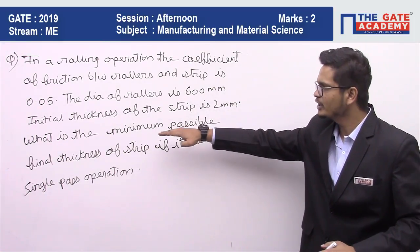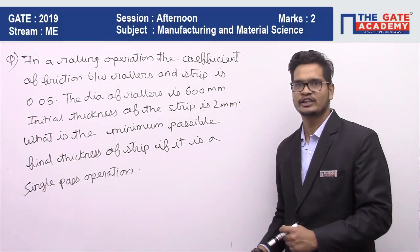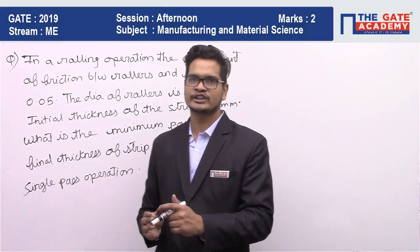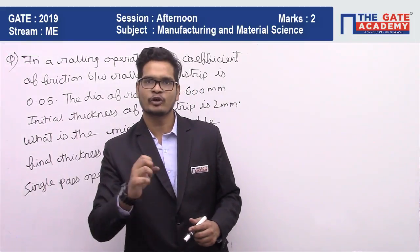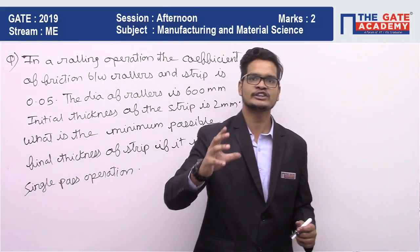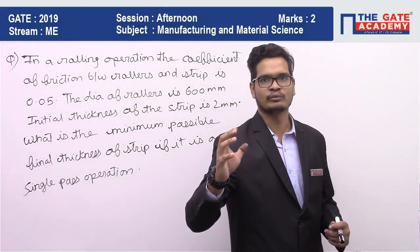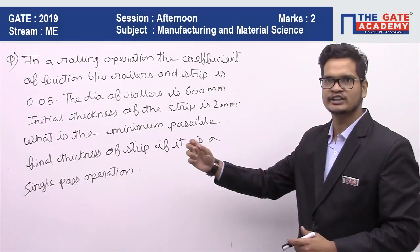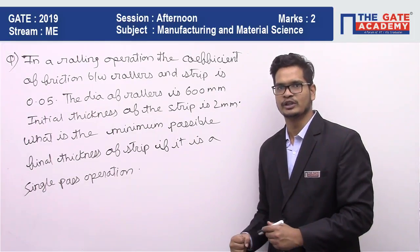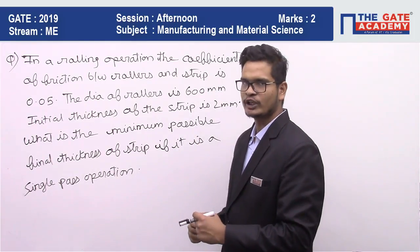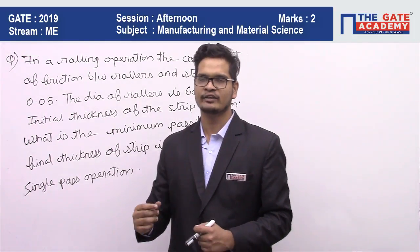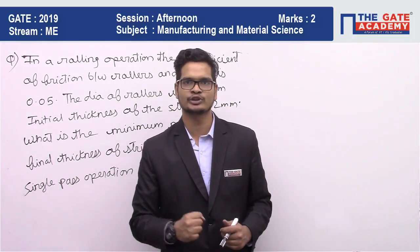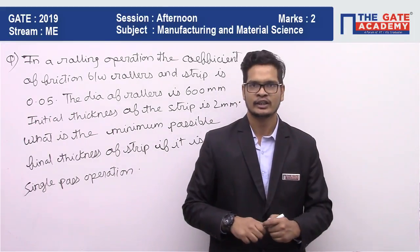They are asking us to find the minimum possible final thickness. The reduction will be minimum possible if it is maximum — if the reduction is maximum, the thickness will be minimum possible. So in rolling, we have a direct relation for maximum possible reduction.